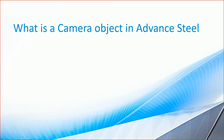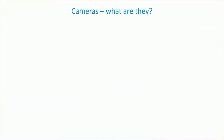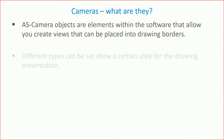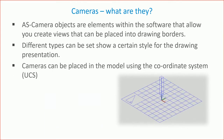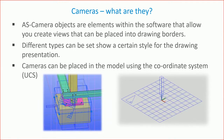So what is a camera object in Advanced Steel? It's an element that allows you to imagine taking a picture of a view inside the model — like holding your iPhone up and pressing the button, looking at a particular area, and cropping it to see what you want. It's been around quite a while, works reasonably well, and has a few limitations. If you can work within those, you can find it quite flexible.